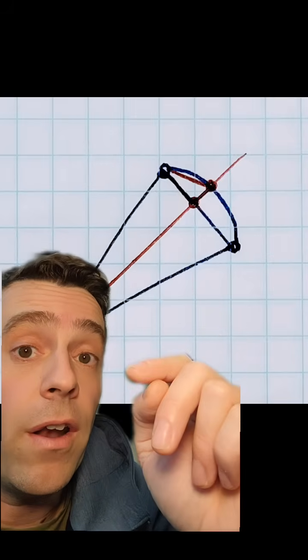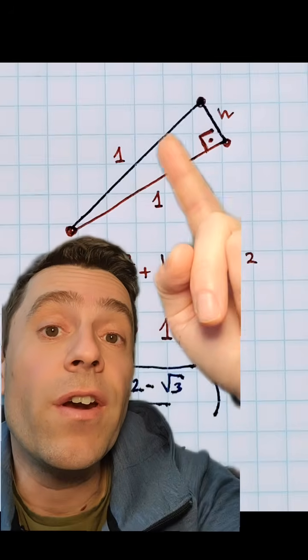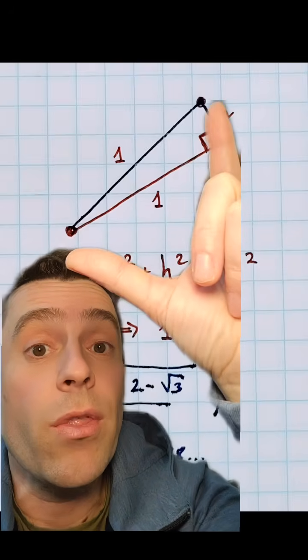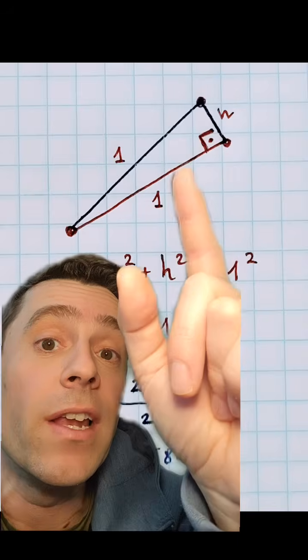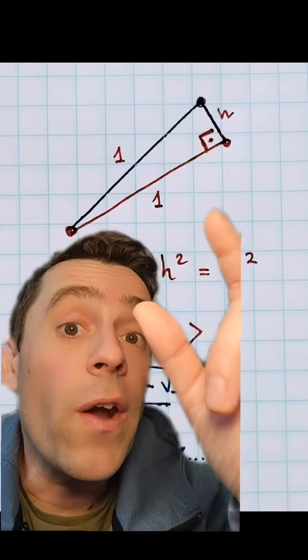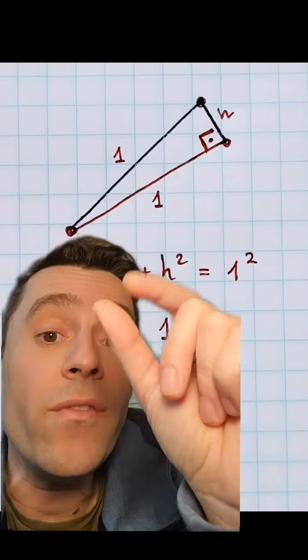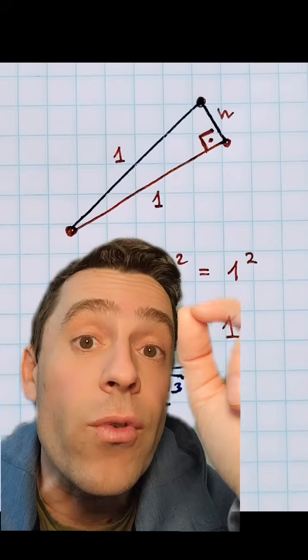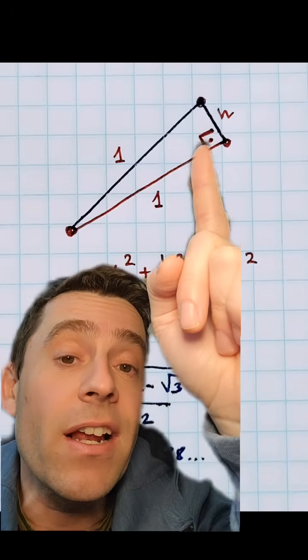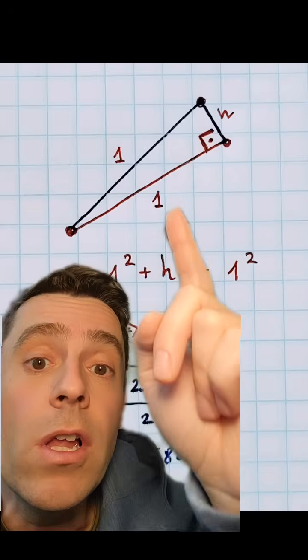Let's look at this triangle here and see what is going on. This side over here was a radius, so it's length 1, but we found out that all those points on that little line are on the circle itself, so they are also all distance 1 from the center.